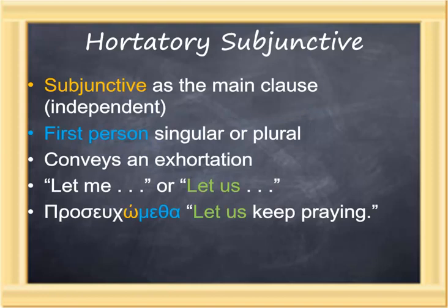The hortatory subjunctive is identified by a subjunctive standing by itself in the main clause — there is no indicative verb. The subjunctive will be first person, either singular or plural. The form conveys an exhortation such as "let me" (first person singular) or "let us" (first person plural). προσευχώμεθα, as the main verb, subjunctive — notice the long connecting vowel and the first person plural ending — is translated "let us keep praying." The "keep" is added because it's a present subjunctive, indicating ongoing action.